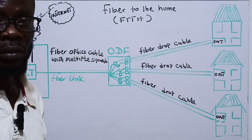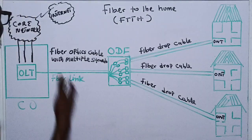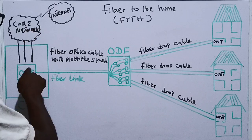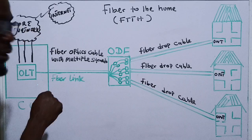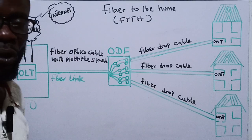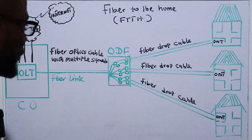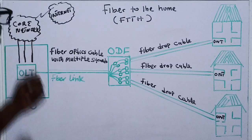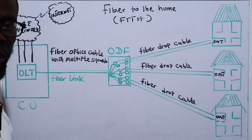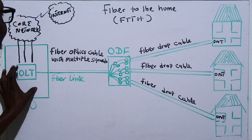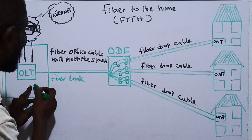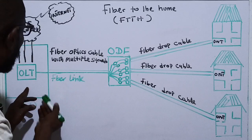As internet service providers, they link homes using fiber optics. They connect this network to a device called the Optical Line Terminal, OLT. This fiber device connects to fiber interfaces on a switch and is the light source.